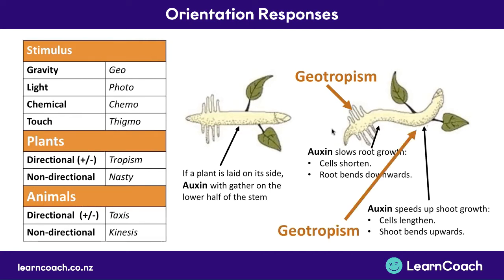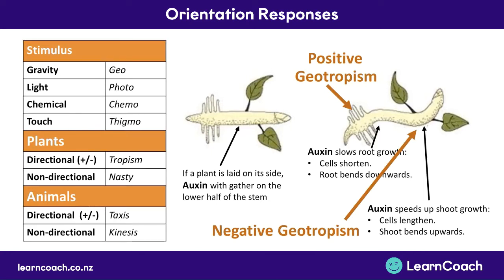The roots grow downwards and the shoots grow upwards — they're opposite responses, so we label them as positive and negative. Positive means in the same direction as the stimulus — gravity goes downwards, so the roots show positive geotropism. The shoots show negative geotropism because they grow against gravity, upwards. So auxin causes positive geotropism in roots and negative geotropism in shoots as the plant germinates.